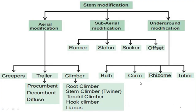Now we will discuss the different modifications of stem. Just as roots perform special functions and are modified, stems also perform specific functions and are accordingly modified — this is called stem modification. Stem modifications are basically of three types: aerial modification, subaerial modification, and underground modification.